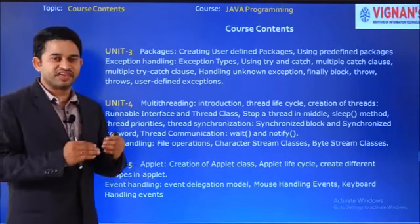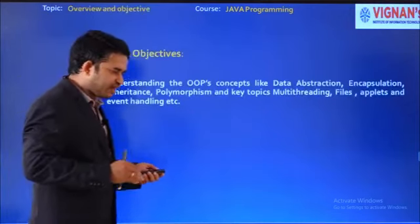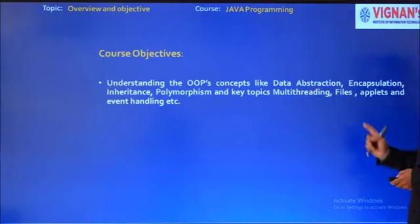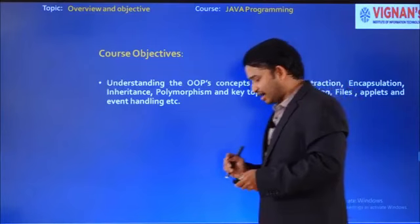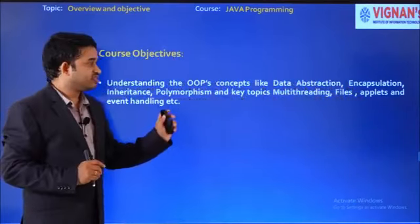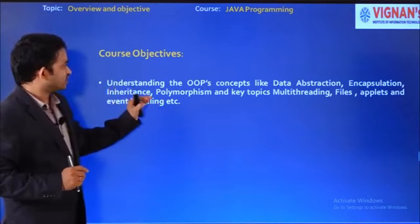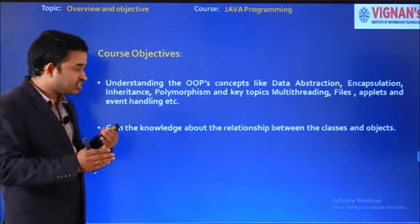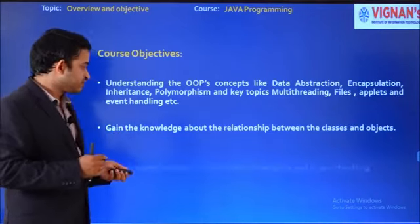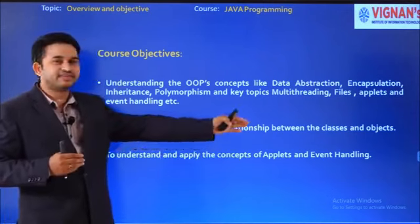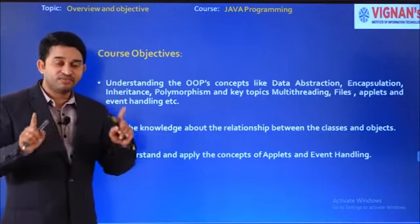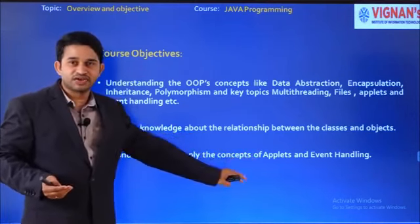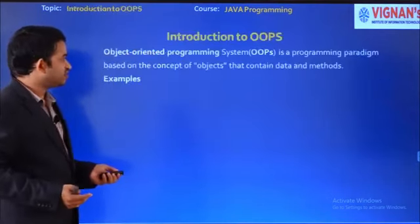This is about the course contents of Java programming. Next, the course objectives: after learning this entire course, students will be able to understand data abstraction, encapsulation, inheritance, polymorphism, and key concepts like multi-threading and file handling. Students will also gain knowledge about the relationship between class and objects, and understand how to apply applets and event handling for developing window-based and web-based applications.